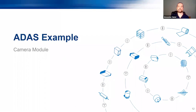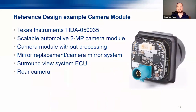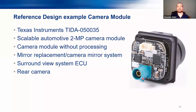Let's take an example. I chose a camera module from Texas Instruments — a scalable automotive two-megapixel camera module. It's quite small and can be used for mirror replacement, surround view systems, or rear cameras. It's a standard module, and as mentioned before, it's very small, so you still need very small components.